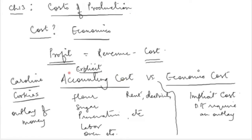In accounting, you would consider costs as anything that requires an outlay of money — anything that you need to pay for, where there is a physical exchange of money involved. Any expenditure you are making would be counted as cost from the perspective of an accountant. Even from the perspective of a layman, if you ask anyone what cost they incurred, they will primarily list down the goods or services that they paid money for.